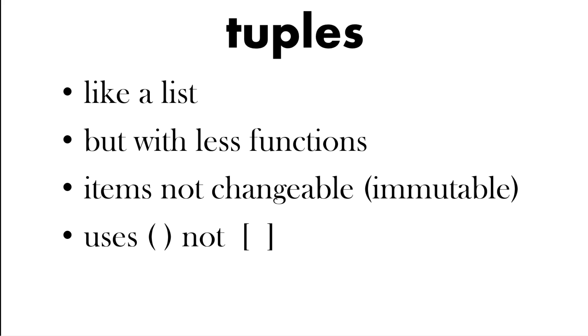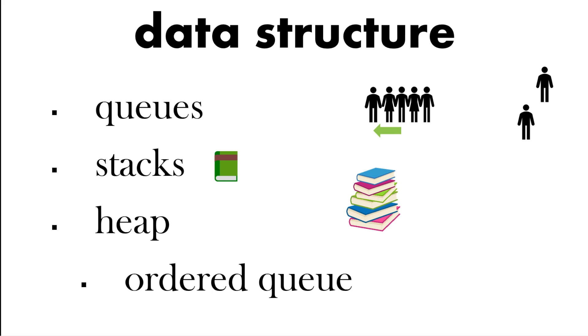So we have in computer science different data structures, not the data structures we've seen like lists and dictionaries and strings that are built into Python, but we do need these different types of storage and they're based on real life scenarios.